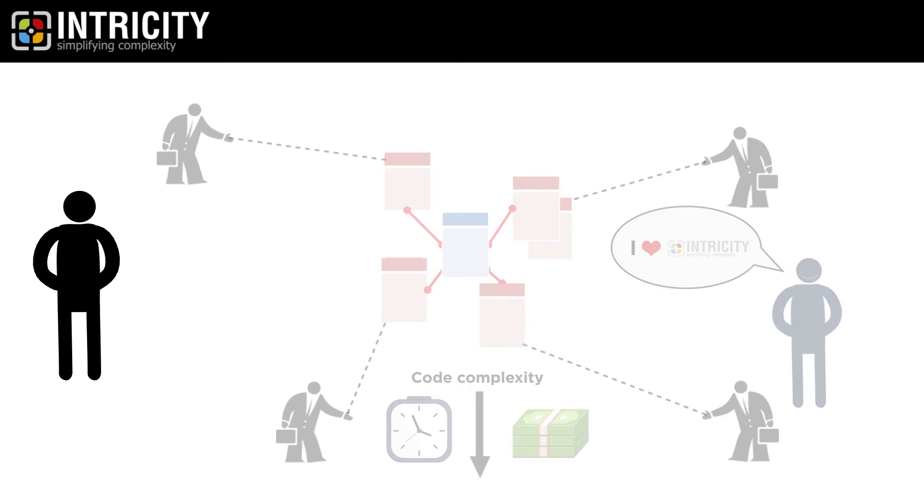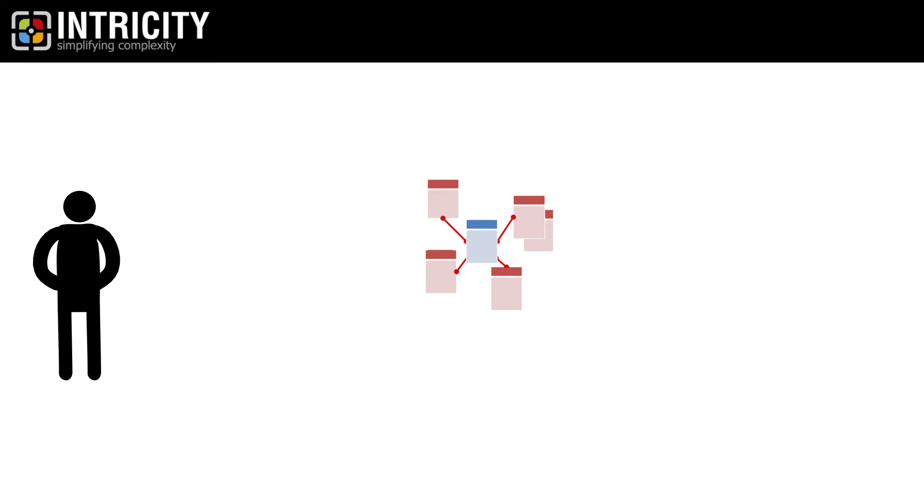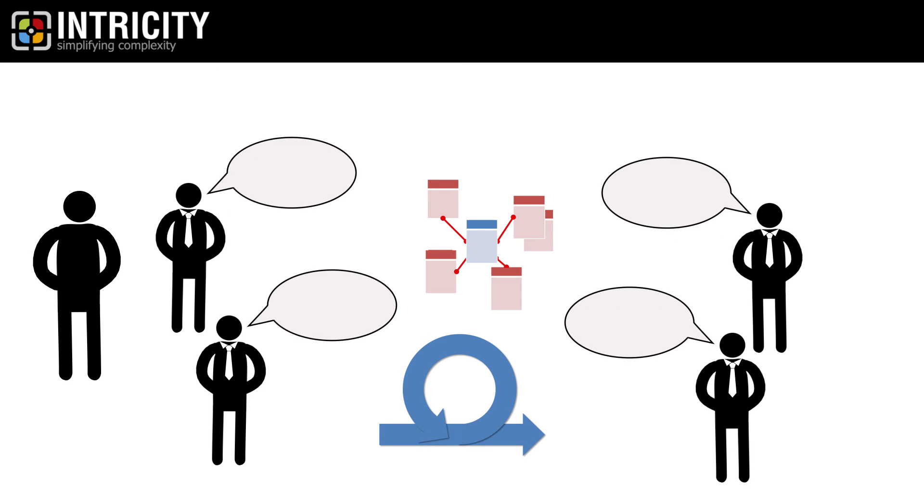Now, generating a data warehouse schema is a process that requires quite a bit of iteration. Usually, it starts with a series of interviews, which provide inputs into some documentation assets. Those assets ultimately lead to an early trial schema, which we call a conceptual data model.